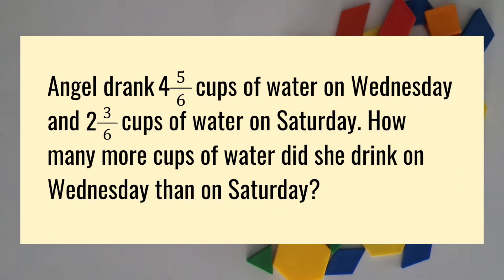Angel drank four and five-sixths cups of water on Wednesday and two and three-sixths cups of water on Saturday. How many more cups of water did she drink on Wednesday than on Saturday?